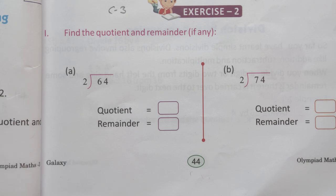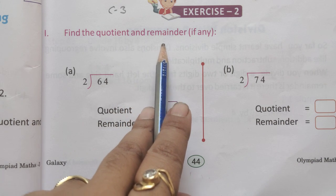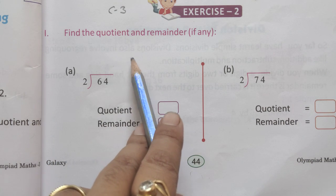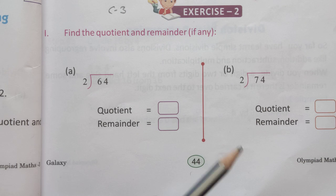Find the quotient and remainder if any. You will remember what we read in the previous video - Exercise 2, quotient, divisor and remainder. We covered all this in the previous video. Today we will solve the exercise. So let's start.